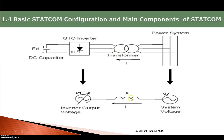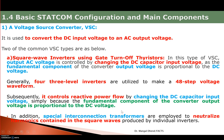The transformer has leakage reactance, represented by a reactance element. V1 is the voltage across the converter or inverter and V2 is the transmission system voltage. If V1 is greater than V2, the STATCOM will supply reactive power; when V1 is less than V2, it will absorb reactive power, depending upon the need of the system.